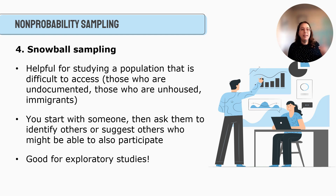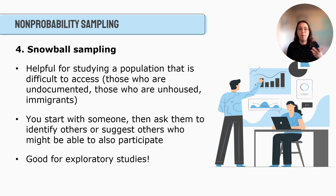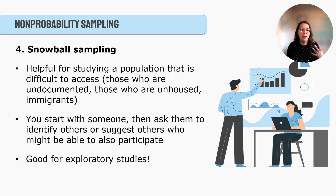The fourth type is snowball sampling, which is great for studying populations that are difficult to access — those who are undocumented, unhoused, or recently immigrated, who may not feel comfortable speaking to you. You start with one participant and ask if they know anyone else in the community who might be willing to participate, and you keep growing the sample through word of mouth. This is especially useful for exploratory studies on new or sensitive topics, where you might ask, 'Who do you think would be willing to talk to me as well?'